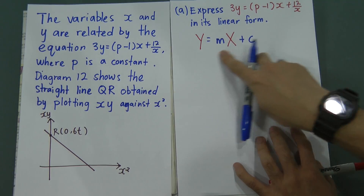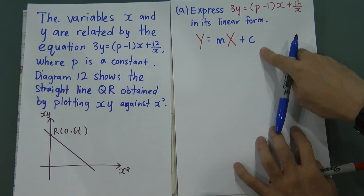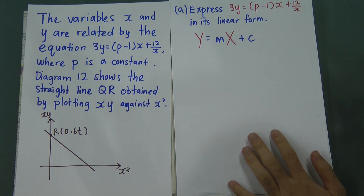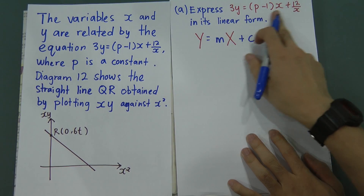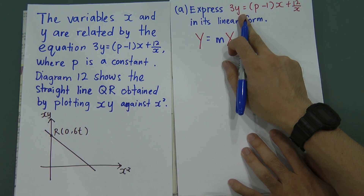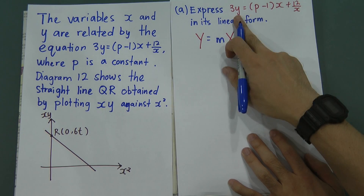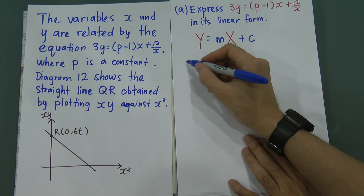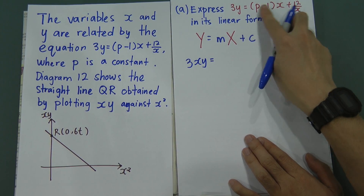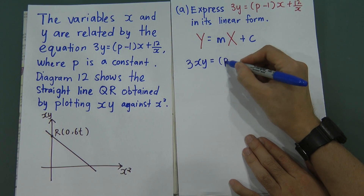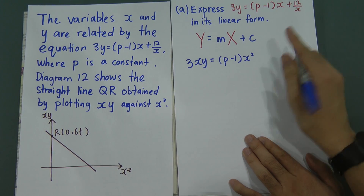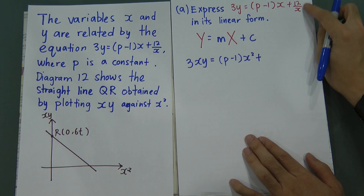So let's rearrange together. In this equation, I want to get xy on the left side — currently I only have 3y — so I multiply everything by x. That gives 3xy = (p−1)x² + 12, because (p−1)x times x = (p−1)x², and 12/x times x = 12.